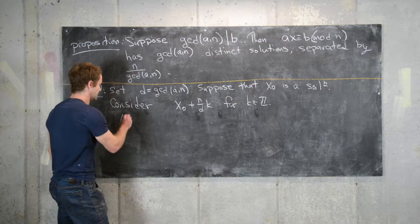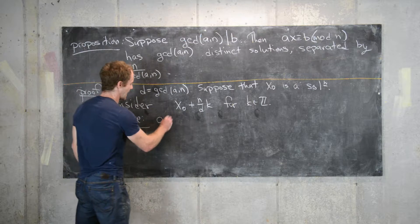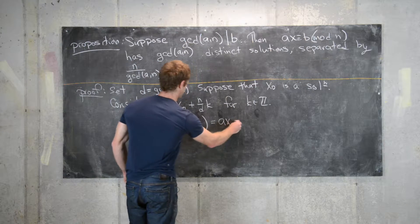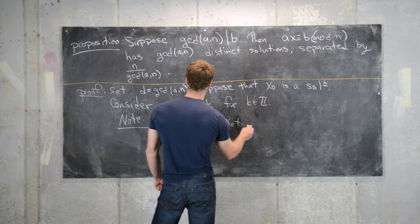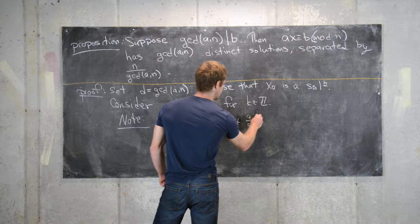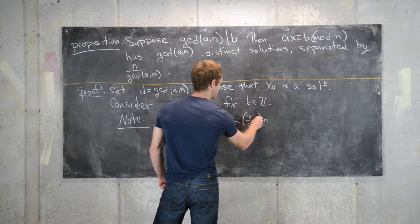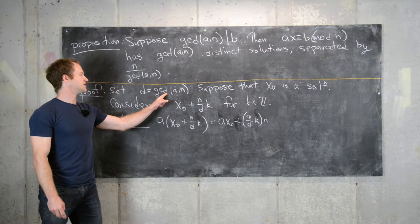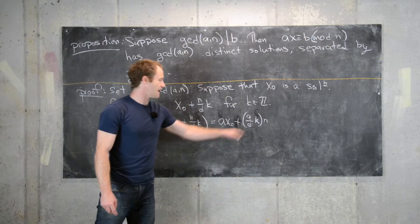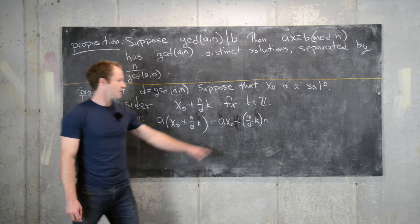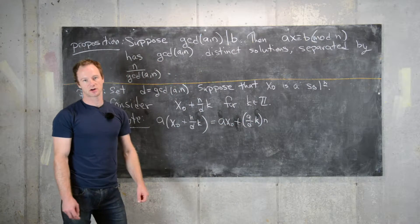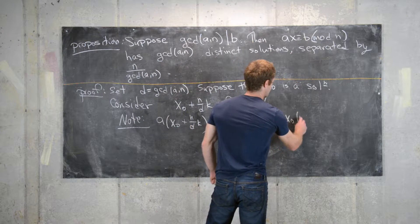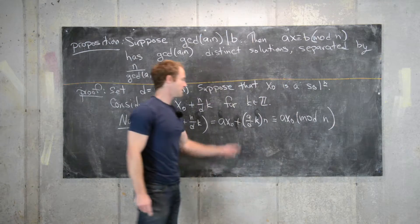If we take a times (x₀ + (n/d)·k), that gives us a·x₀ + (a/d)·k·n. The important thing to notice is that since d equals the GCD of a and n, a over d is a natural number — a whole number — which makes (a/d)·k an integer.